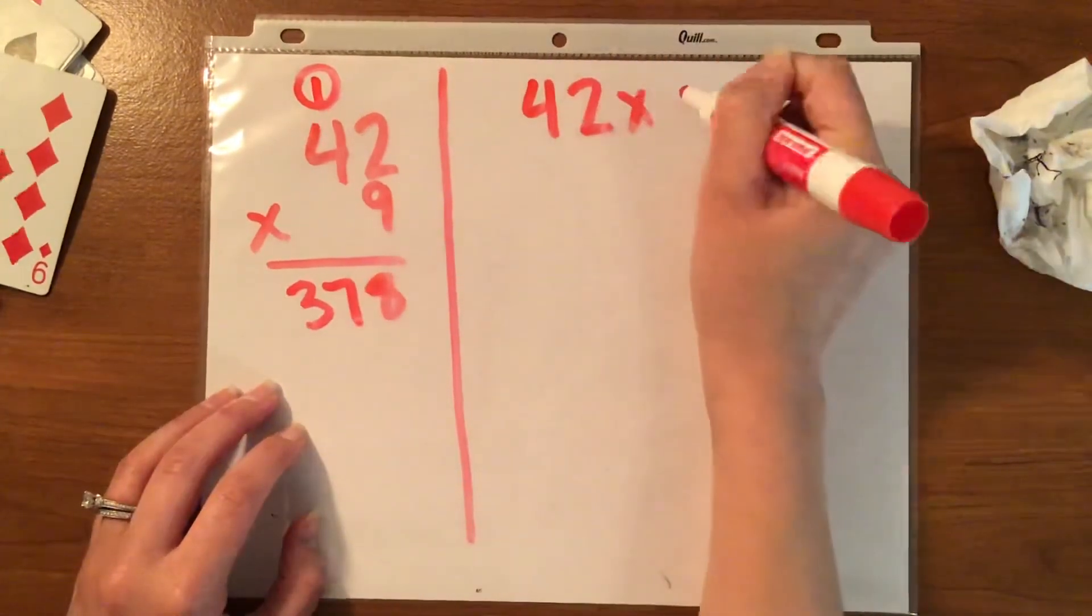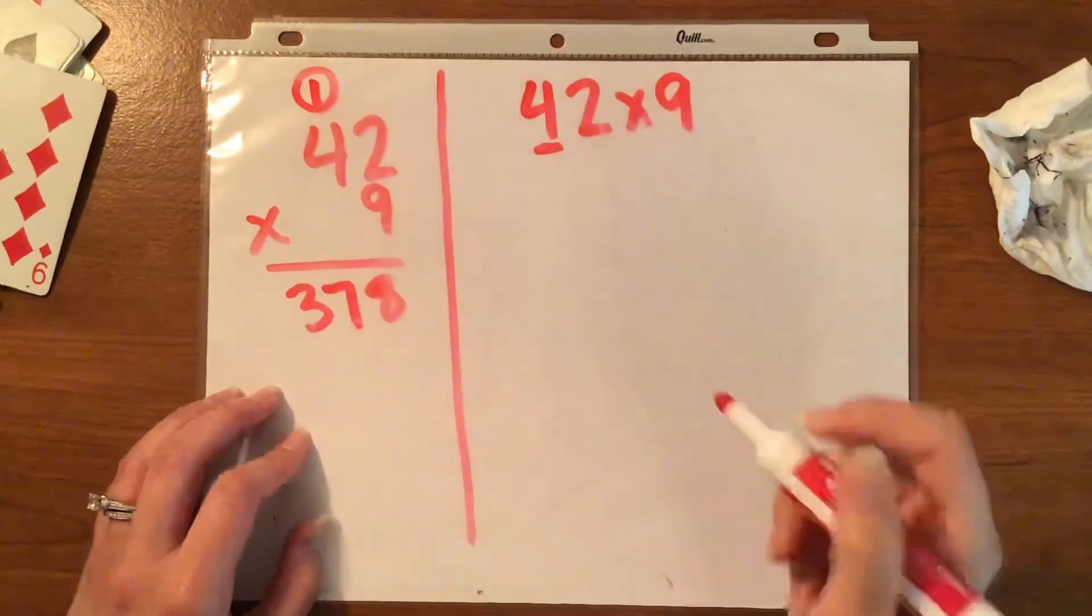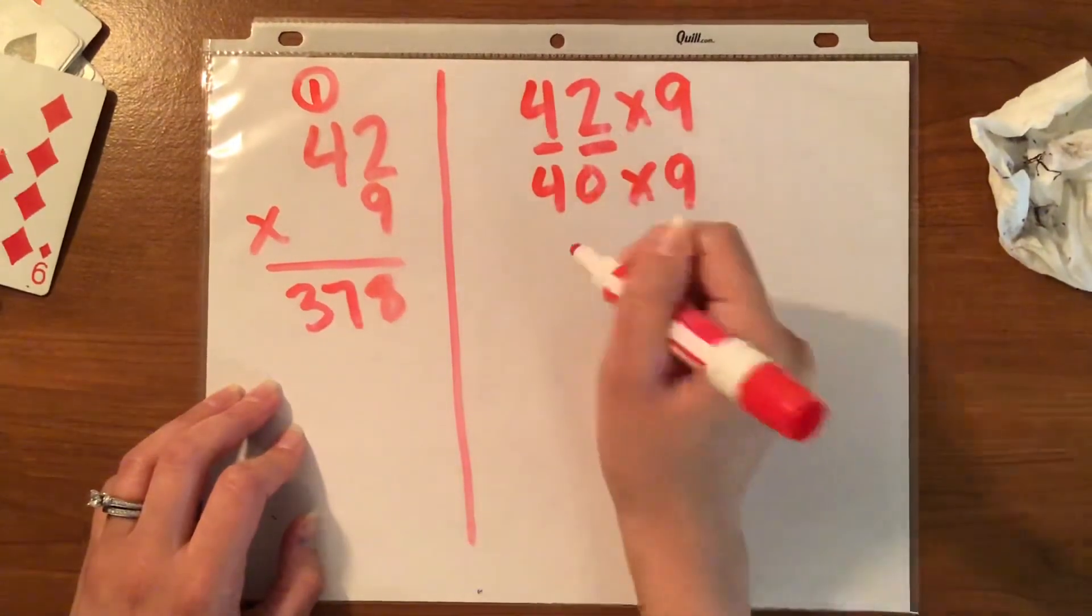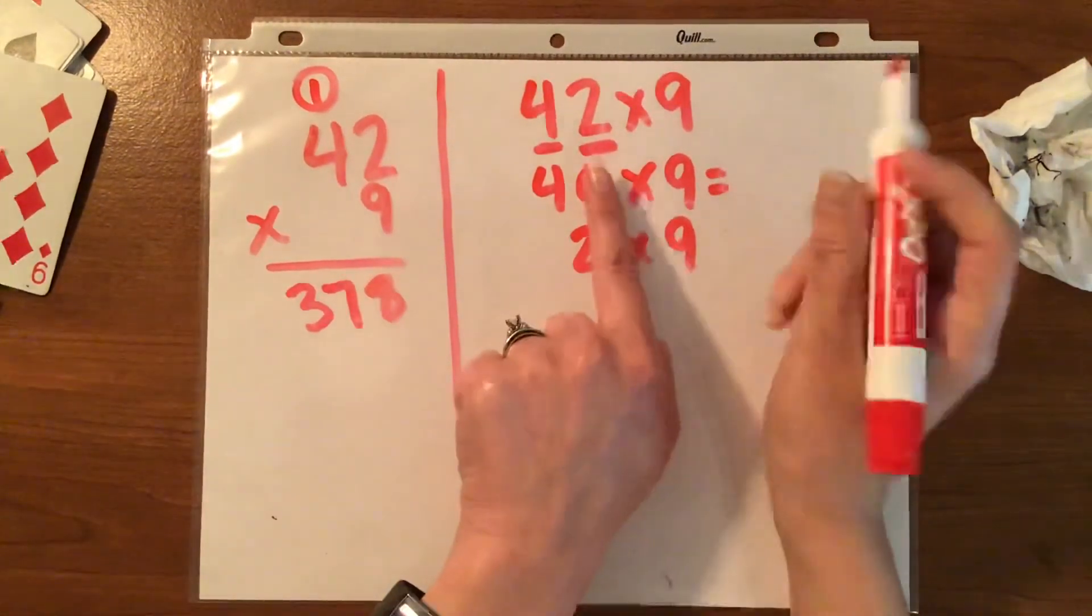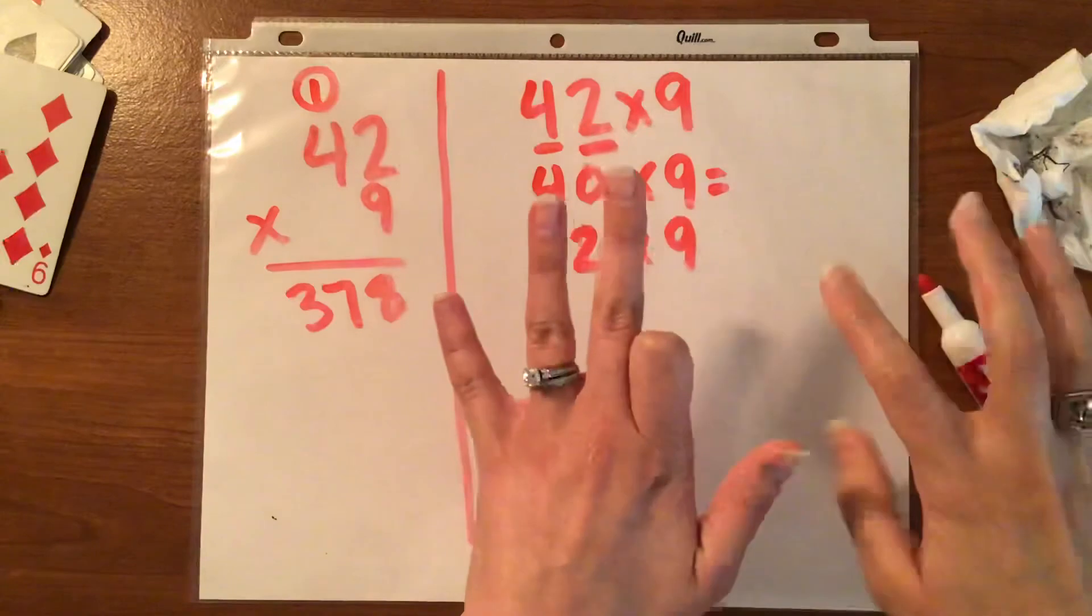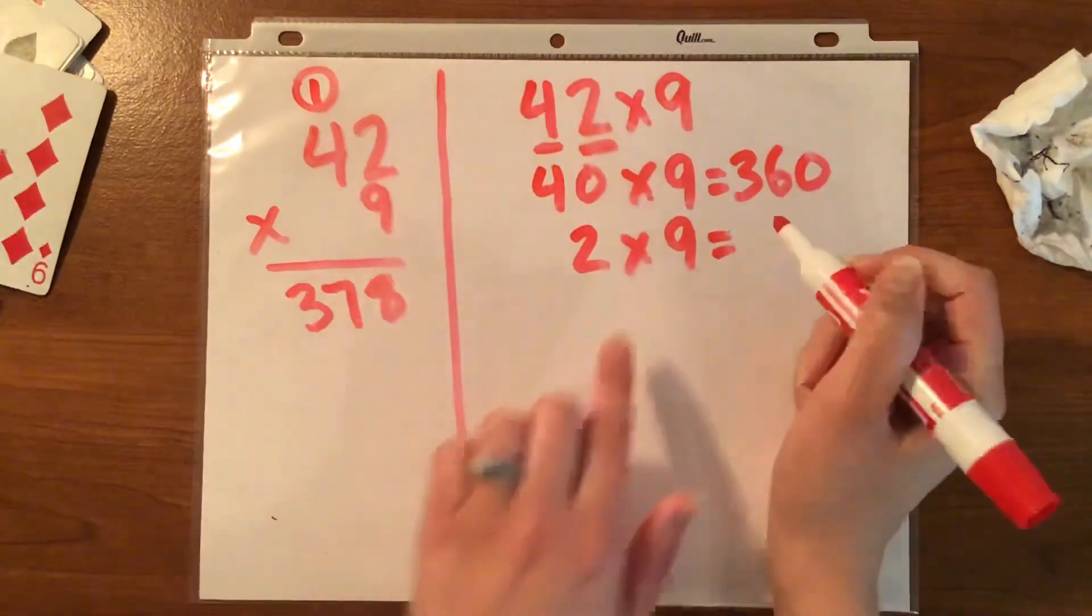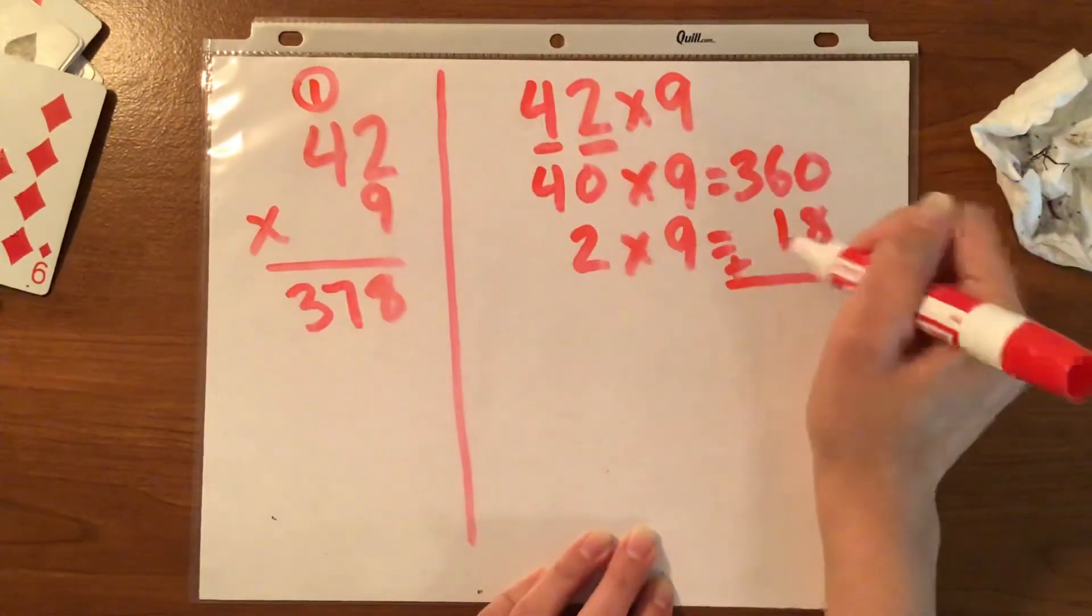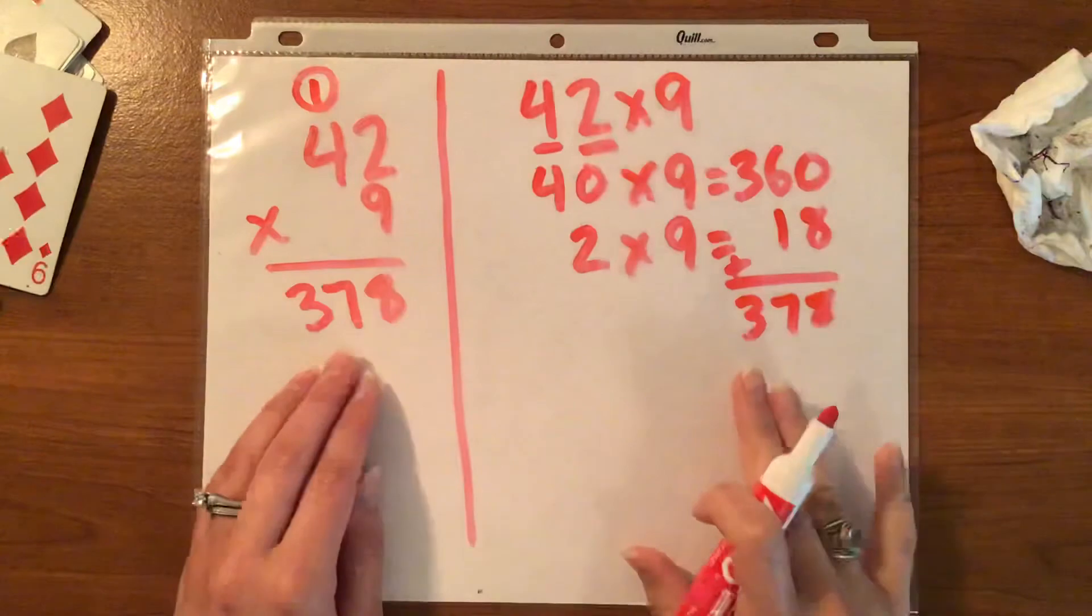Or, forty-two times nine. You can break it apart into place value. So, the value of this four in the tens place is forty times nine. And the value of this two in the ones place is two times nine. Cover up the zero. Four times nine. One, two, three, four. That's three on this side. Six on this side. So, thirty-six. Put a zero at the end. Two times nine is like having a double. Nine plus nine is eighteen. And then add those two. Drop down the eight. Six plus one is seven. Drop down the three. 378. You get the same answer.